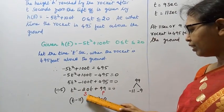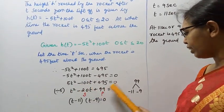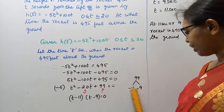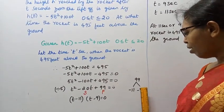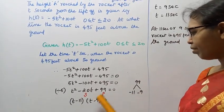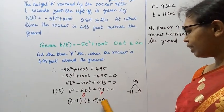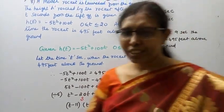Now we factorize. We need the sum and product. The product is 99: 1 into 99. The product -11 × -9 = 99, and the sum -11 + (-9) = -20, which gives us the sum. So we can factor as (t - 11)(t - 9) = 0.